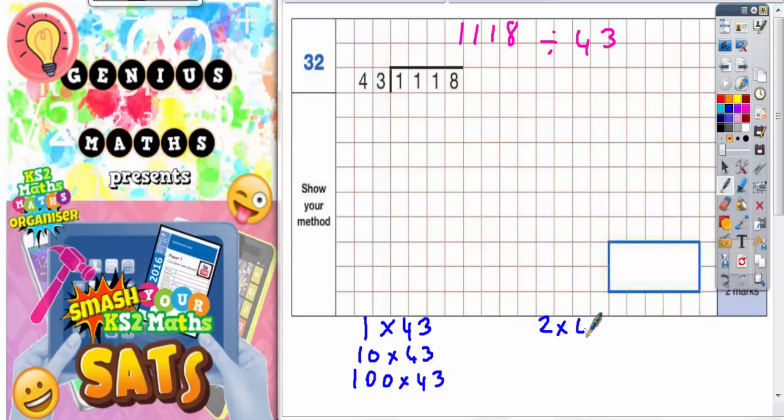2 lots of 43, 20 lots of 43, 200 lots of 43, and the last chunk we'll do is 5 lots of 43. That can also come in handy sometimes. So let's write the answers to these down.